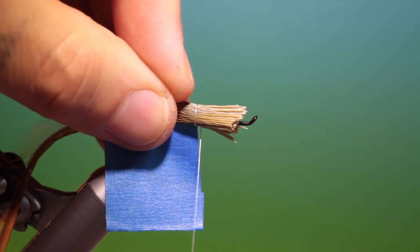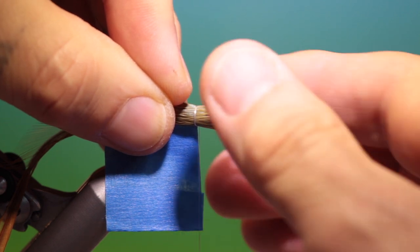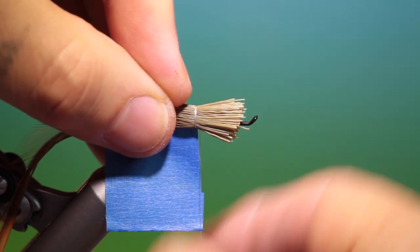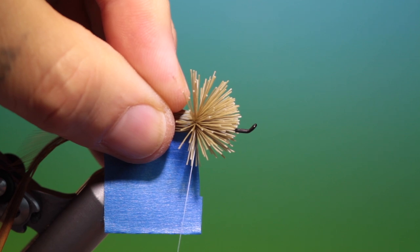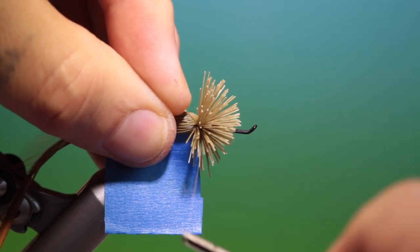What we want to do is go around once loosely, twice loosely, and then we can push it around the hook shank. Tighten and then we can go through it.